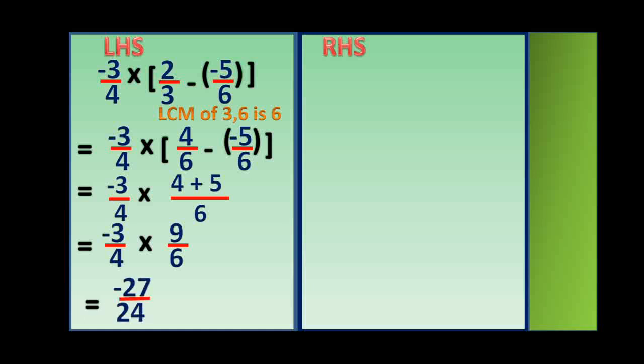So it is 4 plus 5 by 6, which equals minus 3 by 4 into 9 by 6. Now multiply the numerators and multiply the denominators: minus 3 into 9 gives minus 27, and 4 into 6 equals 24. Both are divisible by 3, so you can divide by 3. That gives minus 9 by 8.